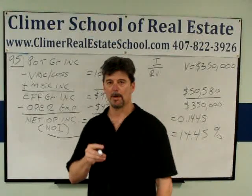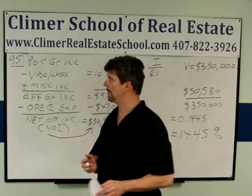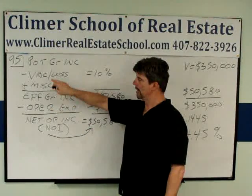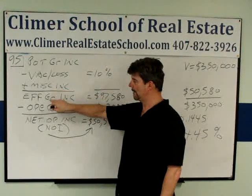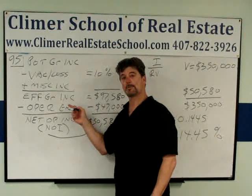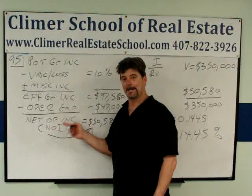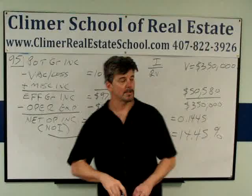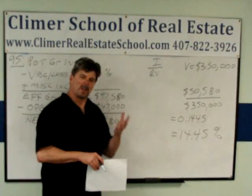Let's talk about that. When you talk about income capitalization, you should know this flow anyway — it's useful for your own investment knowledge. Potential gross income minus vacancies and losses, plus miscellaneous income, gives you something called effective gross income. Then you take effective gross income, subtract operating expenses, and that gives you net operating income, or NOI — and that's always the number that you really want. You also have to know I over RV — that's the income capitalization memory peg.